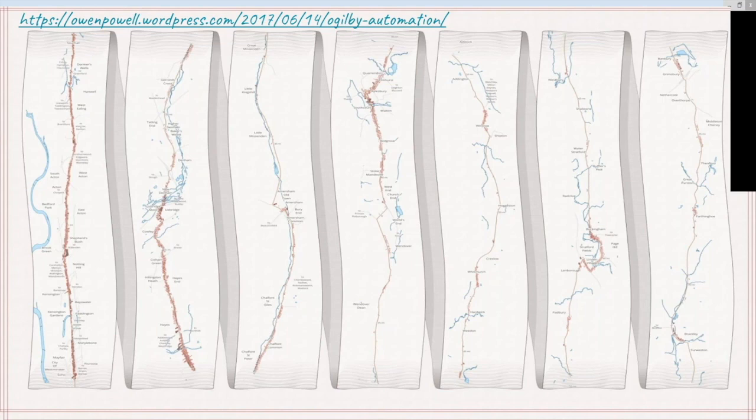This was all done in FME using the Ordnance Survey data, showing a section of the route from London to Banbury. They used the Shortest Pathfinder to find the quickest route from London to Banbury along A roads, so it visits through towns and villages. If you were doing a motorway it would bypass all of that and wouldn't be as exciting to look at.